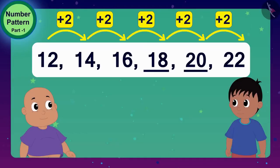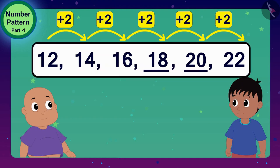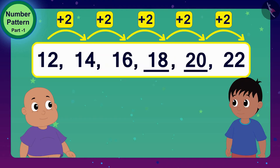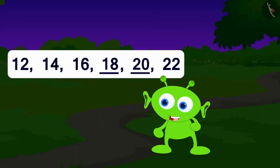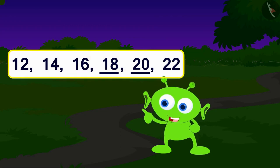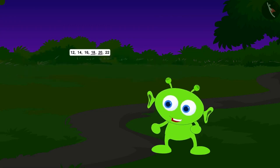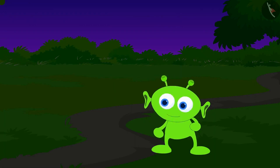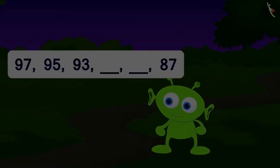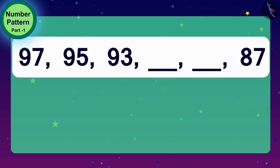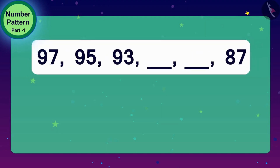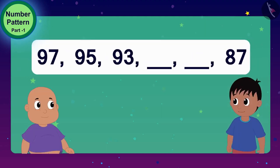Raju and Bablu completed this number pattern using the process of addition. Well done. You two have solved it perfectly. Let's see if you can solve my next puzzle. The alien now showed his second puzzle to Raju and Bablu.